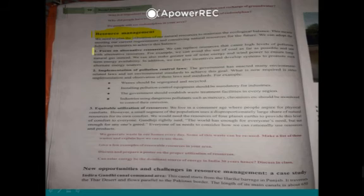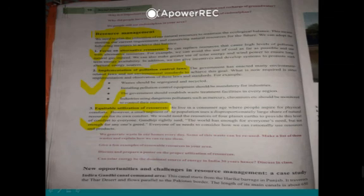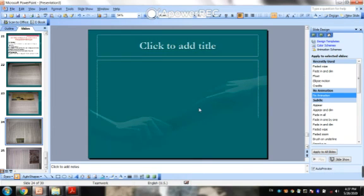Resource management focuses first on alternative resources — for example, using a cycle for short distances. The second technique is implementation of pollution control laws. The third is equitable utilization of resources — using all resources in an equal and balanced way rather than over-relying on a single resource.